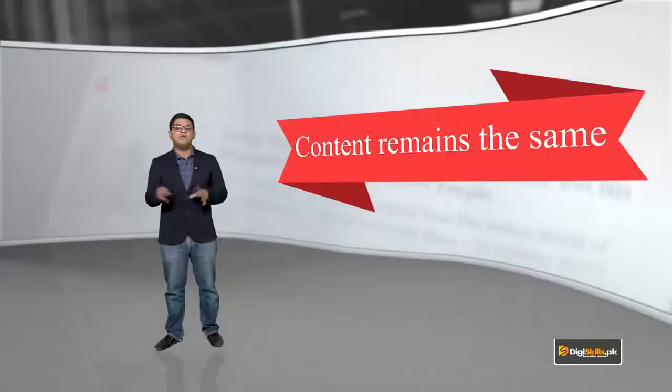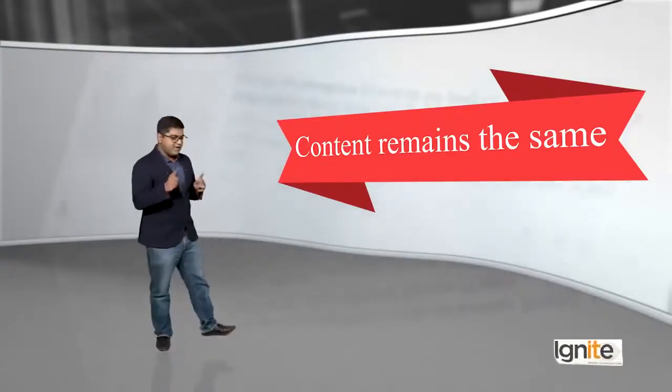Kisi bhi website mein, kisi bhi content management system mein, themes ka function yeh hai ke woh aapko bahut aasaani se website ki appearance change karne deta hai. Aap yellow, blue, white, black, red, purple — kisi bhi rang mein apni website ko rangna chahte hain, toh woh aap kar sakte hain using themes. The great part is that content remains the same — content wohi rahega. WordPress aur kisi bhi CMS ki yeh khasiyat hai ke woh content ko nahi badalta, sirf theme change hoti hai. Aap don't need to learn how to code — sirf with a click of a button, you can actually change the theme of your website.